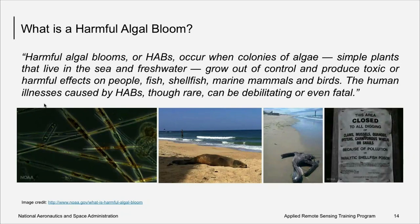Sometimes, though, algae blooms can be harmful. What is a harmful algal bloom? Harmful algal blooms, or HABs, occur when colonies of algae, simple plants that live in the sea and freshwater, grow out of control and produce toxic or harmful effects on people, fish, shellfish, marine mammals, and birds. The human illnesses caused by HABs, though rare, can be debilitating or even fatal.